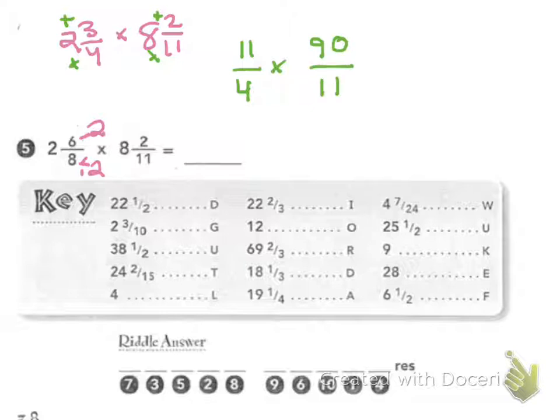Well, I see that now that I have this problem, I'm going to do some reducing. You can only reduce something on the top with something on the bottom. So 11 goes into 11 once, and it goes into 11 once there. I'm left with 4 and 90.